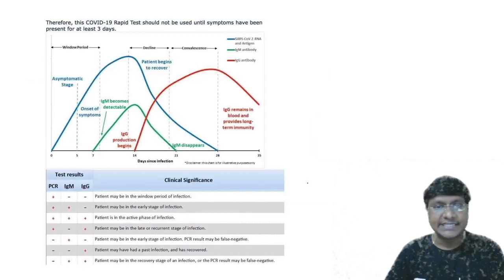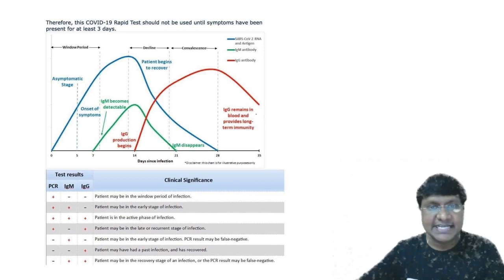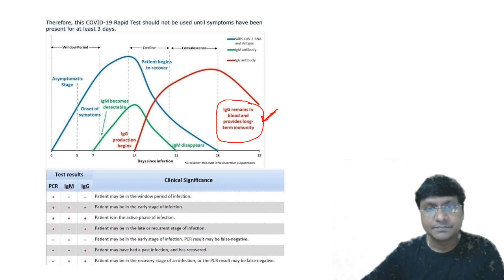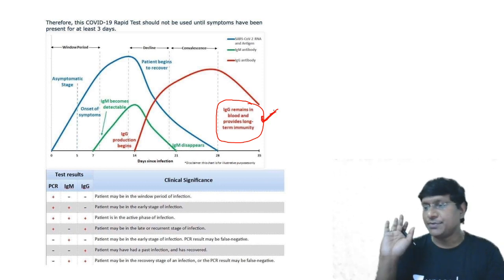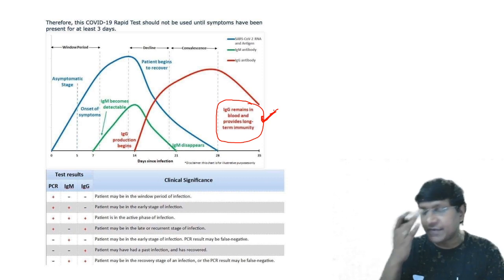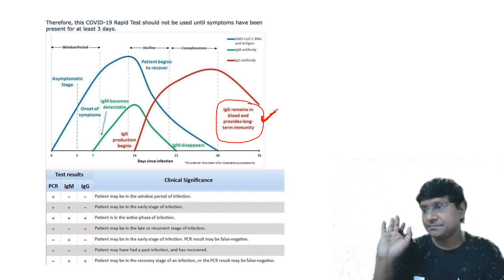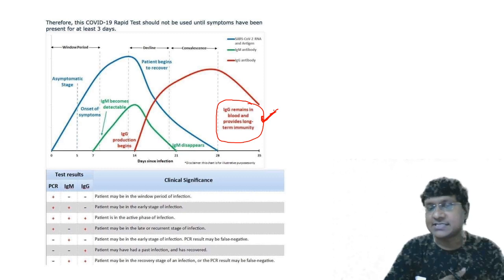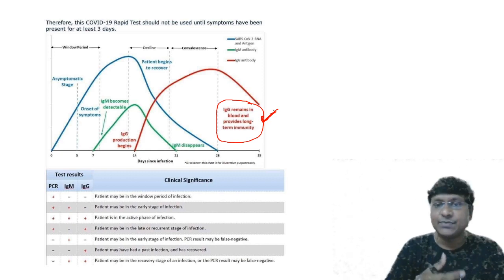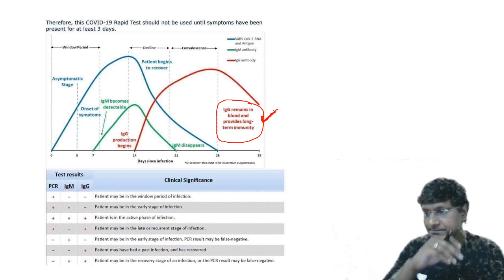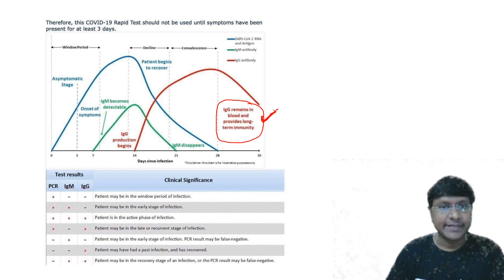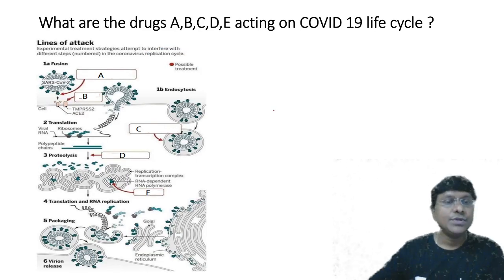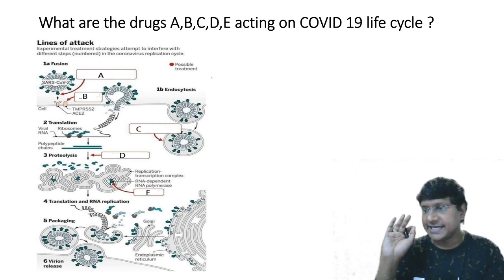IgG remains in the blood and provides long-term immunity. Don't be in a hurry — once an individual is positive, it takes time for the sequence of antibodies and PCR to resolve. How long IgG will remain is still being studied since COVID-19 only emerged in December 2019.